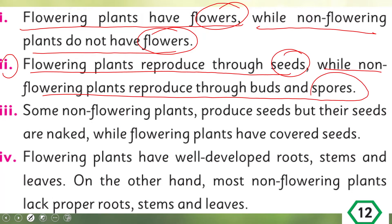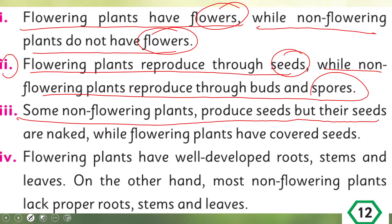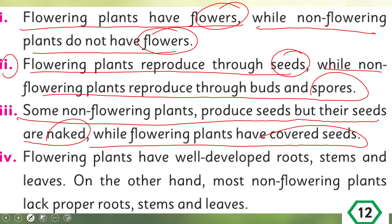Some non-flowering plants do produce seeds, but their seeds are naked, while flowering plants have covered seeds. So even if non-flowering plants have seeds, those seeds are naked — they are not covered like the seeds of flowering plants.